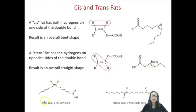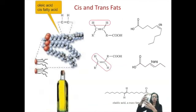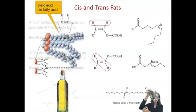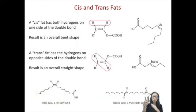We can see this in oleic acid, which has a cis arrangement where the hydrogens are on the same side, forcing a bent shape. Oleic acid is the main component in olive oil. Olive oil is a liquid at room temperature because these oleic acid molecules are bent and can't stack up — when they can't stack up, you have flow, so it remains a liquid.